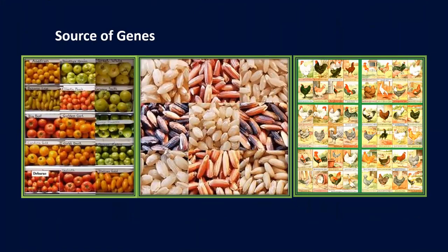Moving on to the next value, biodiversity acts as a source of genes. Look at these pictures. There are different varieties of genes present in our own nature on planet Earth. Gene resources — animals, plants, microorganisms and invertebrates — which are used for food, agriculture and forestry are called genetic resources.